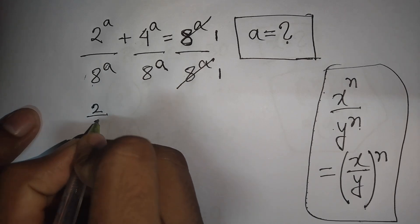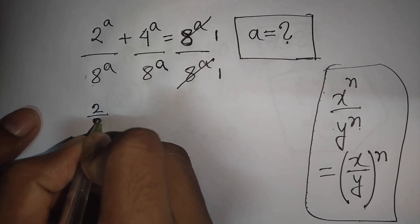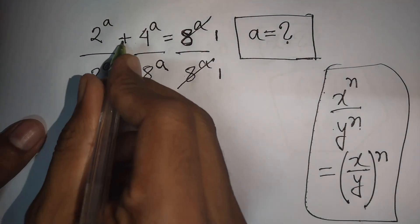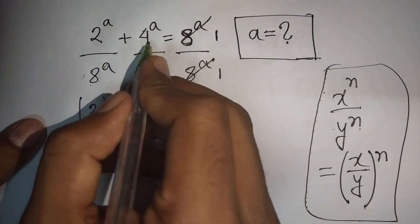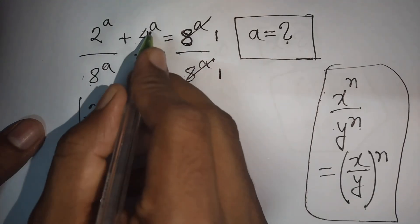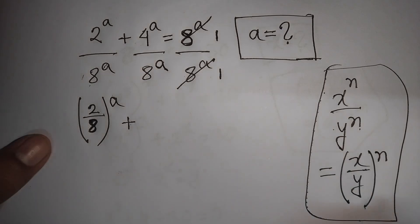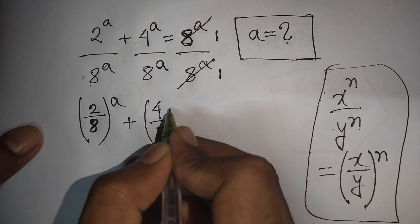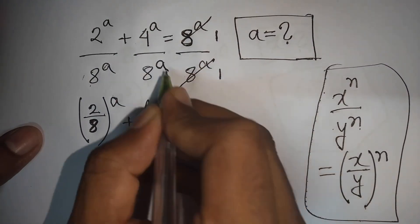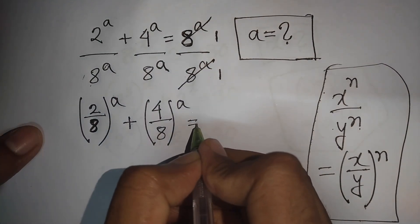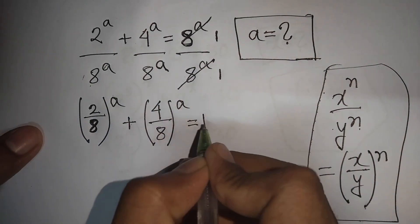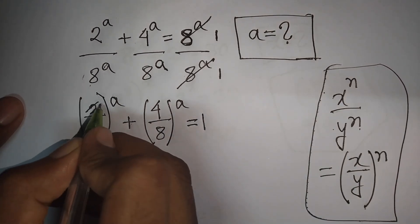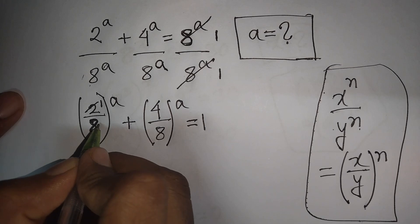Again, a same power but different base, so according to this exponential rule we can write 4 over 8, bracket to the power a. This gives us (2/8)^a + (4/8)^a = 1.